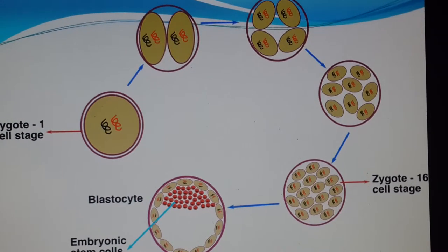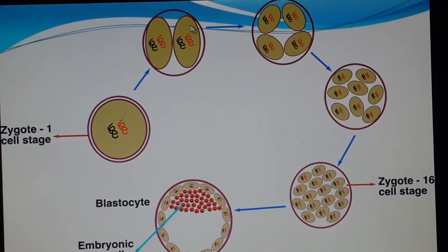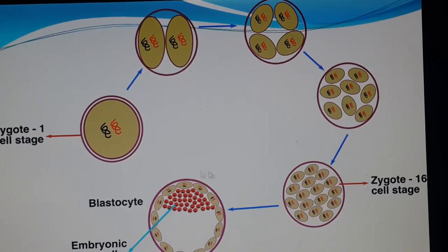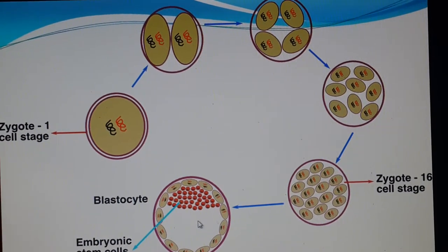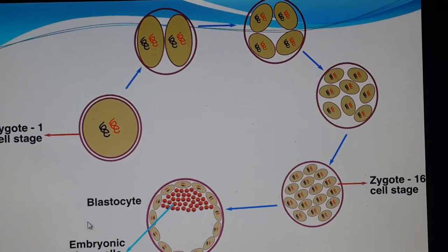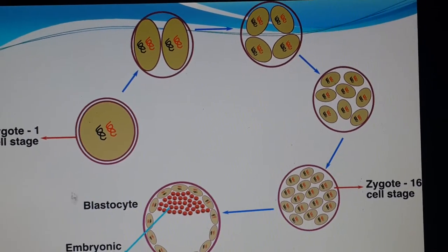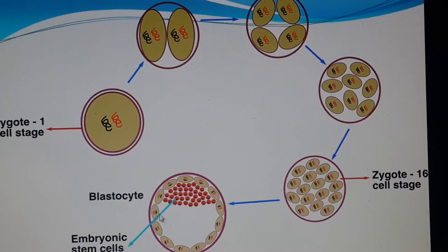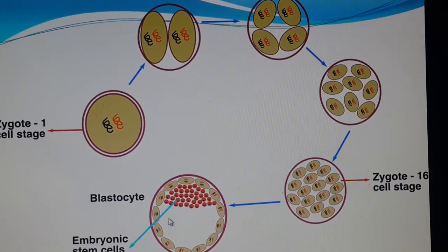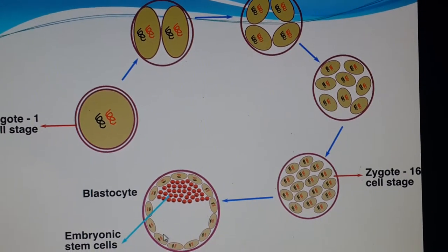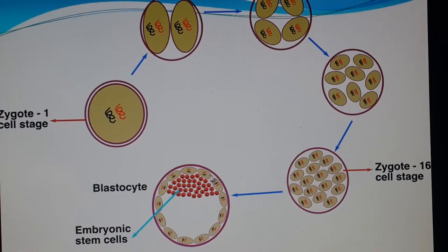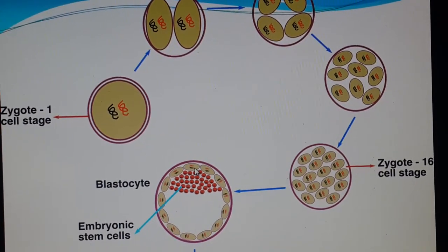As the division of the zygote continues and the morula has been formed, a cavity will be formed inside the morula — we call this structure the blastocyst. Inside the blastocyst, we have a cavity filled with fluid. So we have the outer cell mass. The outer cell mass is called the trophectoderm, and it is the first epithelium in the embryo to be formed.